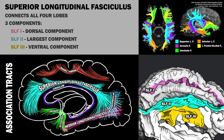SLF2, the largest component of the superior longitudinal fasciculus, runs from the inferior posterior parietal cortex, which controls spatial attention and movements of the eye, and goes to the dorsolateral prefrontal cortex. Hence, SLF2 helps visual perception of our surroundings. This pathway is bidirectional, so signals in the other direction might help focus spatial attention.